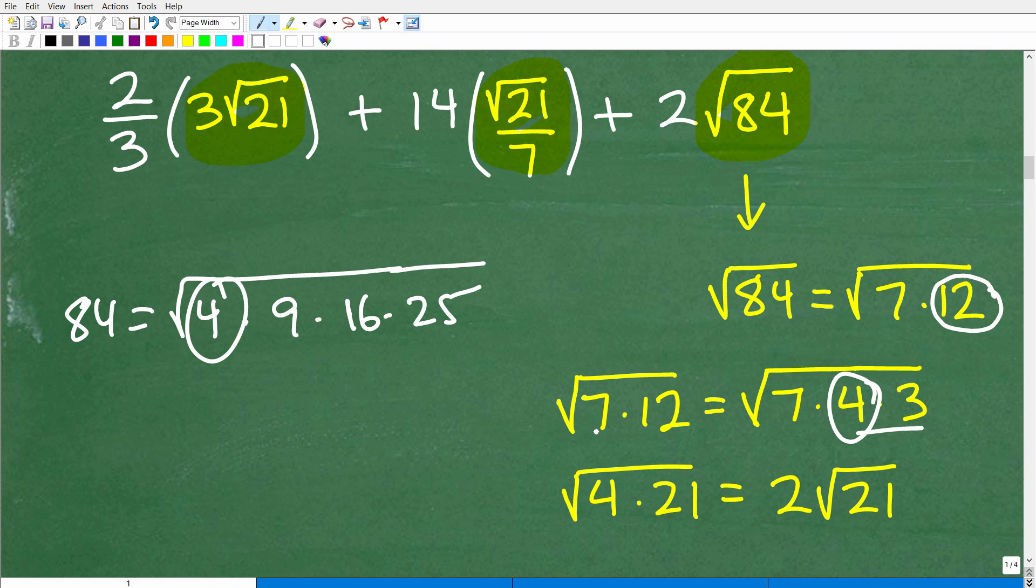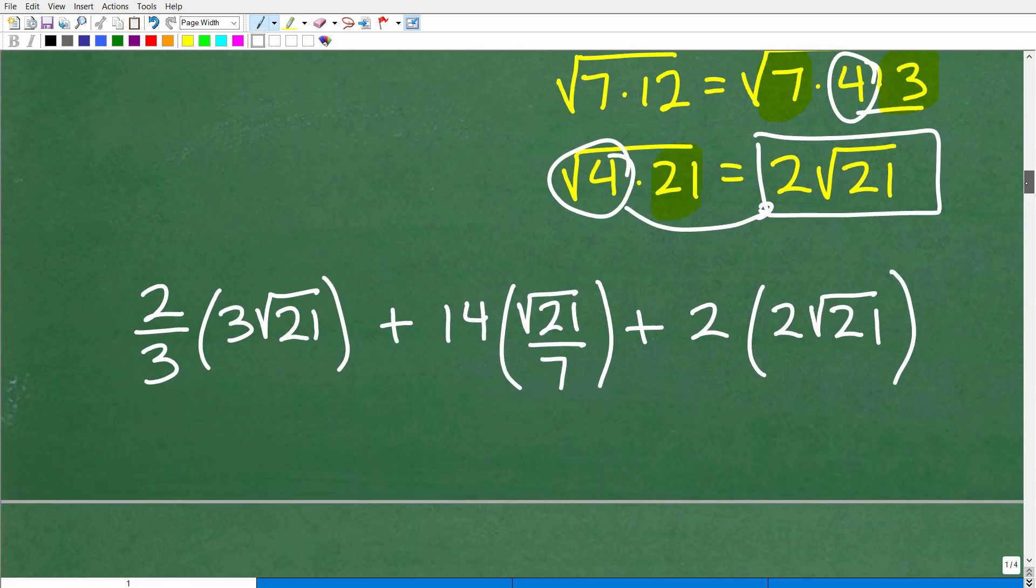So I'm like, oh, okay, so the square root of 7 times 12 I can write as the square root of 7 times 4 times 3, which, of course, is 12. And now this is the same as the square root of 4 times 21 because I'm just going to multiply these two numbers together. So 4 times 21 is 84. And now I can break this up as the square root of 4 times the square root of 21. The square root of 4, of course, is 2. So this would be 2 times the square root of 21. All right, so I'm going to replace that with 2 times the square root of 21. And here we go.